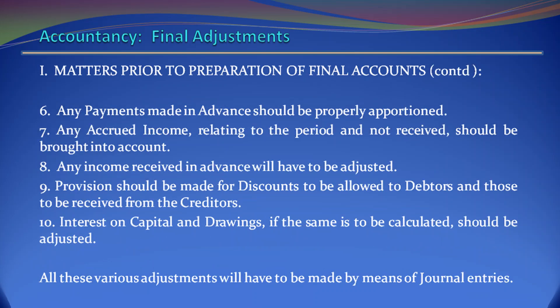6. Any payments made in advance should be properly apportioned. 7. Any accrued income relating to the period and not received should be brought into account. 8. Any income received in advance will have to be adjusted. 9. Provisions should be made for discounts to be allowed to debtors and those to be received from creditors. 10. Interest on capital and drawings, if the same is to be calculated, should be adjusted. All these various adjustments will have to be made by means of journal entries.